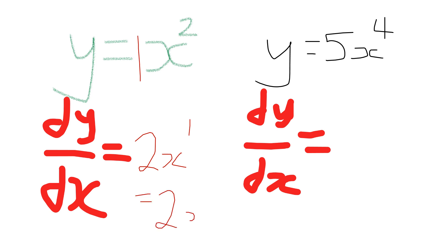Okay, next one. If y equals 5x to the 4, find dy/dx. So we're going to do 5 times 4, that'll be 20. We're going to put the x, the power reduces by 1 or goes down by 1, so it's 20x cubed. And that's differentiation.